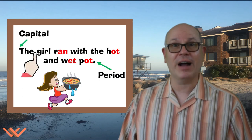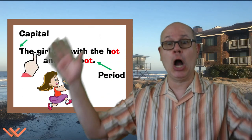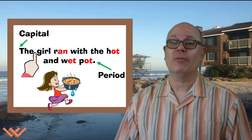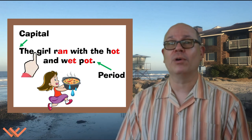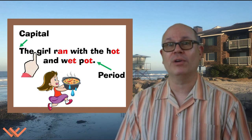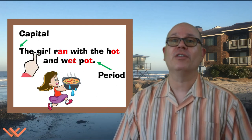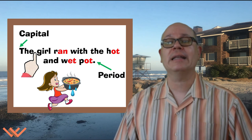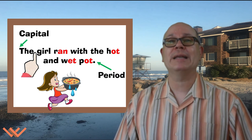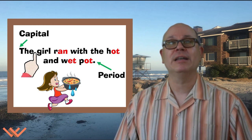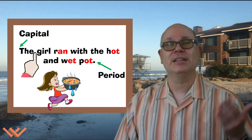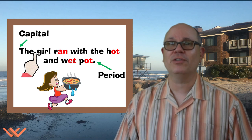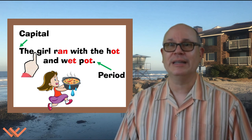And finally, we can have a long sentence with lots of word family words. So, The girl ran with a hot and wet pot. Again, starts with a capital, ends with a period, and we have many more finger spaces throughout the sentence.